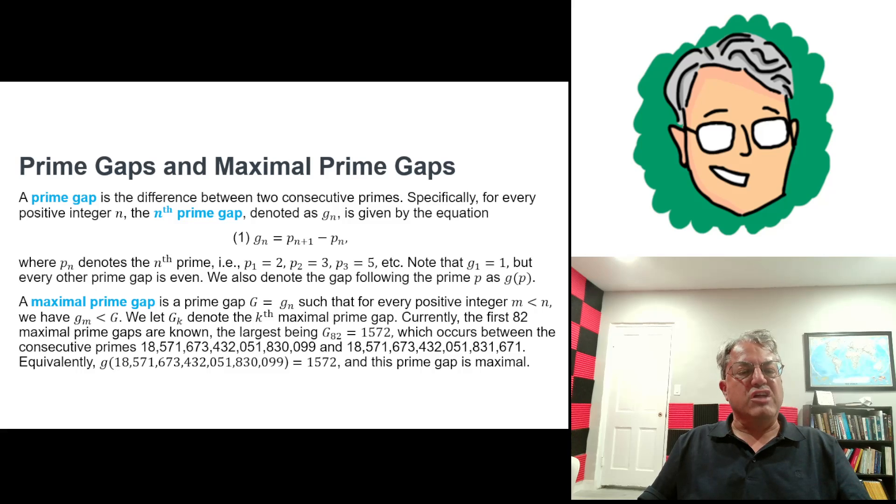So first I have to talk about what prime gaps are. A prime gap is just, if you define Pn to be the nth prime, then we can say the nth prime gap, we can call that Gn, and we can just define that to be Pn+1 minus Pn. So for instance, G1 would be 3 minus 2 since 2 is the first prime and 3 is the second prime. That's just 1. And that's the only prime gap that's equal to 1 because all other primes besides 2 are even. So the second prime gap would be 2, 5 minus 3, the third is also 2, 7 minus 5, the fourth is 4, 11 minus 7, and so on.